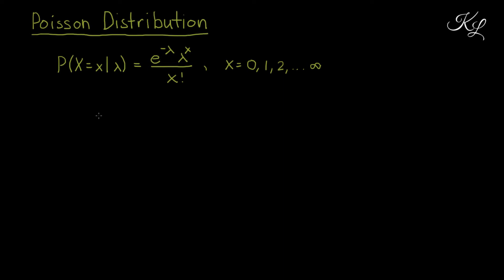Hello everyone. In this lecture, I'm going to show you how to derive the mean, the variance, and the moment generating function for a Poisson distribution. The Poisson distribution is a discrete distribution with its probability mass function defined as P(X = x | λ) = e^(−λ) · λ^x / x!, for x = 0 to infinity.